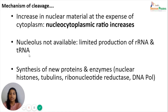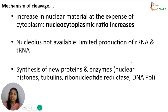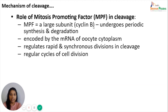There occurs synthesis of new proteins and enzymes, particularly those required during early development of the zygote, such as nuclear histones, tubulins, ribonucleotide reductase, and DNA polymerases. The mitosis-promoting factor consists of a large subunit known as cyclin B, which undergoes periodic synthesis and degradation cycles. Cyclin B is encoded by the messenger RNA present in the cytoplasm of the oocyte. It helps regulate the rapid and synchronous divisions in cleavage, thereby maintaining the regular cycles of M phase (mitotic phase) and S phase (DNA synthesis phase) during cell division.